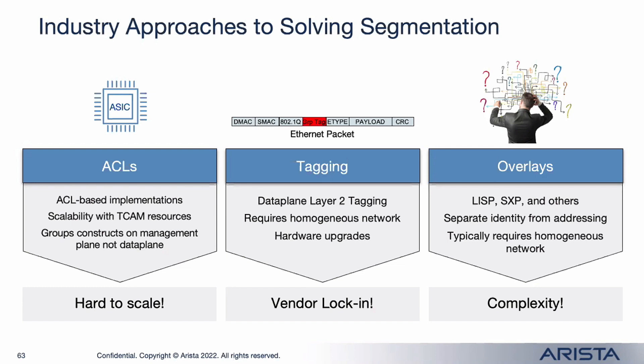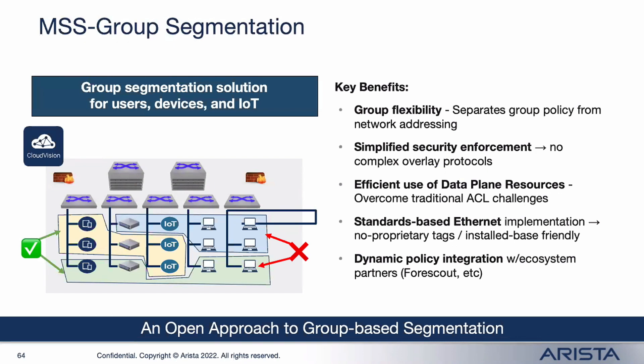The question is how do you convey that group information? A solution already available today puts group information into the Ethernet frame itself. That solves the scalability problem, but it makes the Ethernet frame proprietary — only switches following that implementation can understand those frames. If you want to put this into a multi-vendor environment, you essentially have to deploy overlays so that other devices don't drop frames they wouldn't understand.